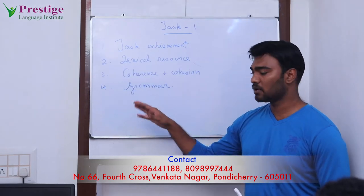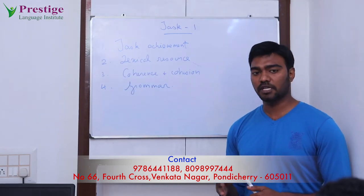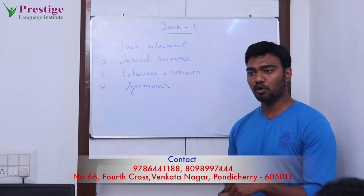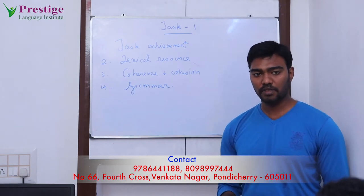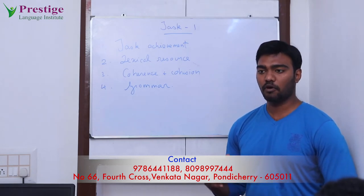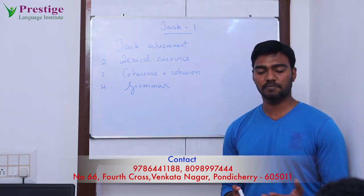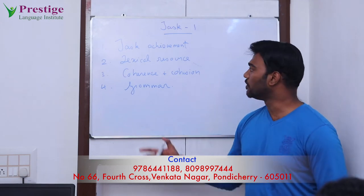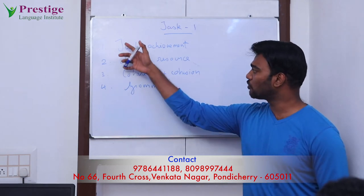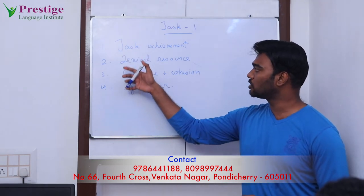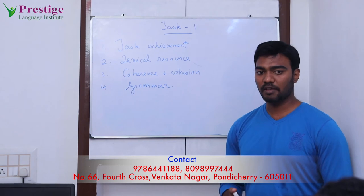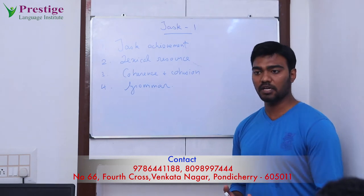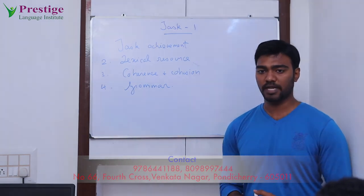Grammar is tested by the range of sentences you use — it should include simple, complex, and compound sentences — and also by the tenses you use, including past, present, and future. Each criterion carries 25% of your total score, and finally your score will be converted to a band of 0 to 9.